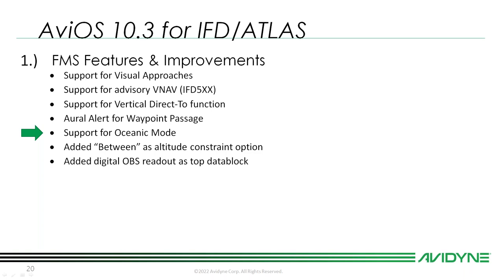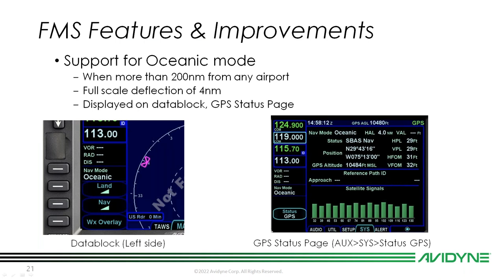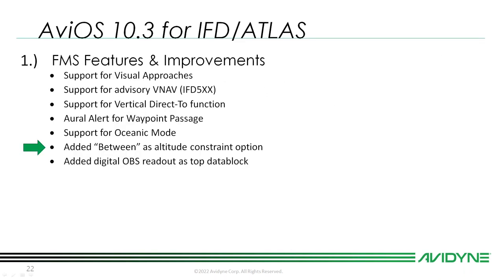Support for oceanic mode: when you're more than 200 nautical miles from any airport — most places over an ocean — the full-scale deflection moves to four nautical miles on the CDI. We'll show that on the data block, it'll change the CDI deflection externally, and on the GPS status page under nav mode you'll be able to see that you are in oceanic mode.